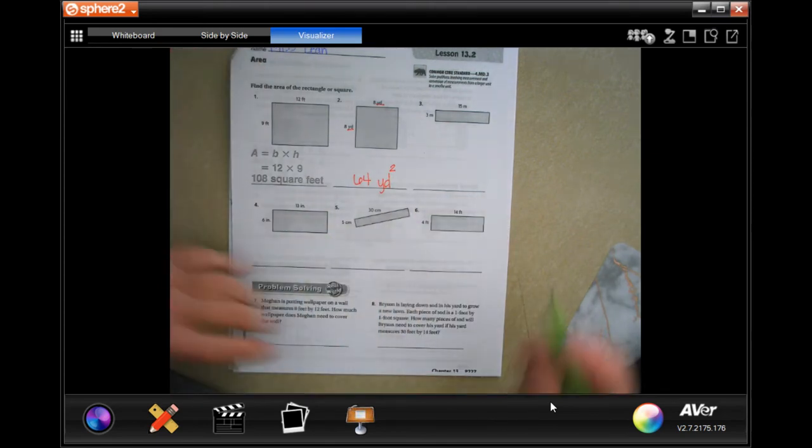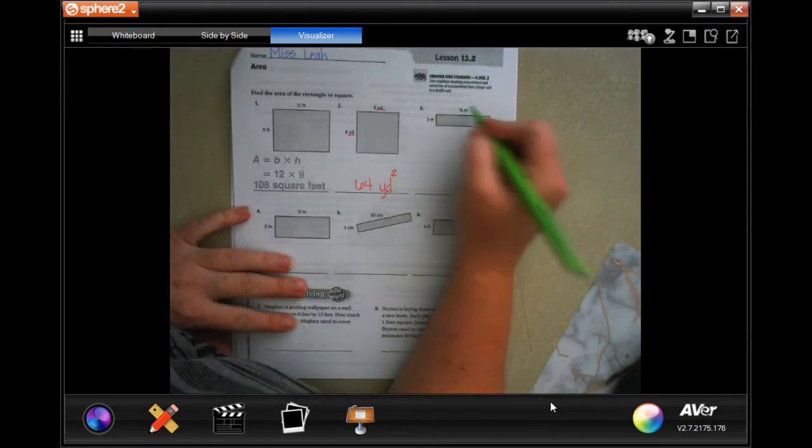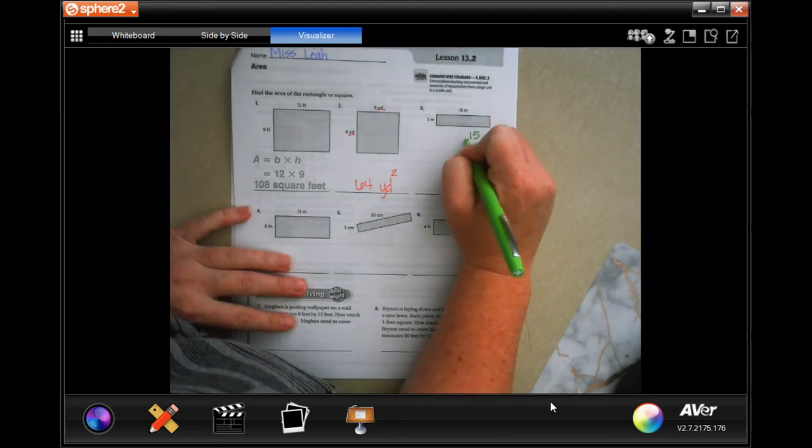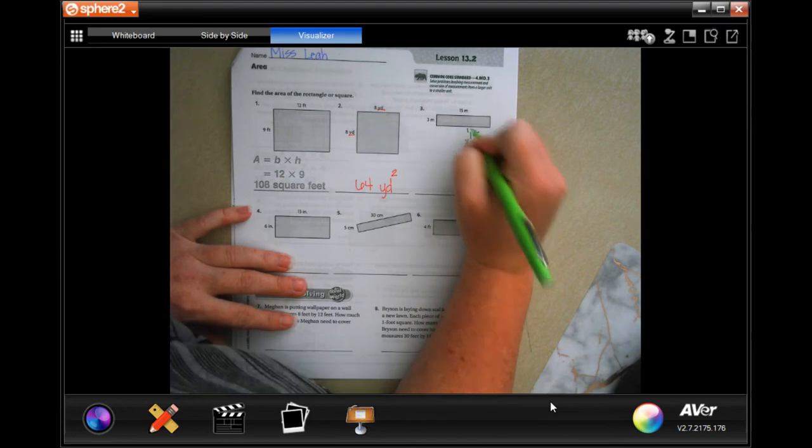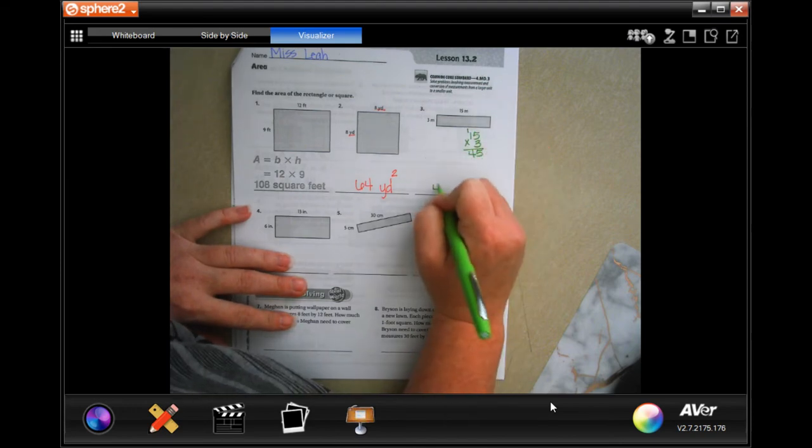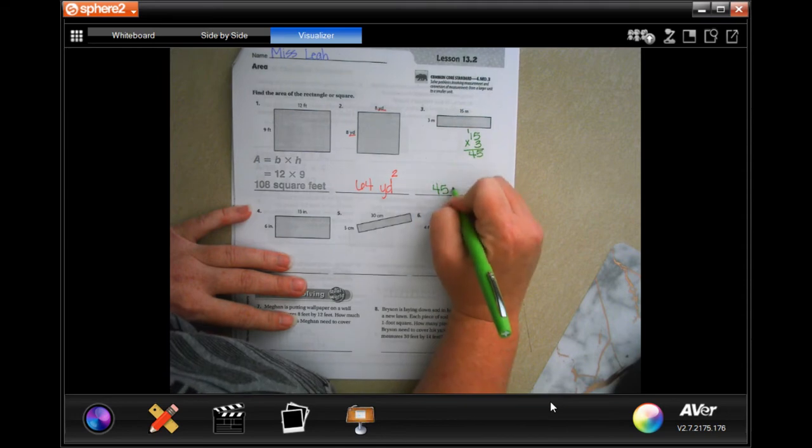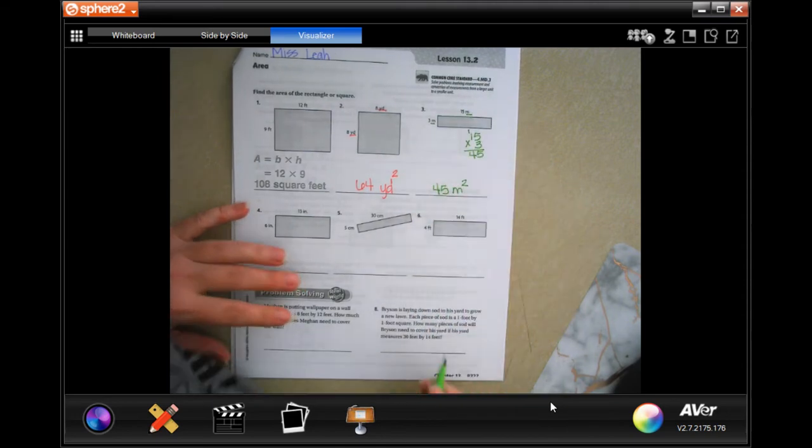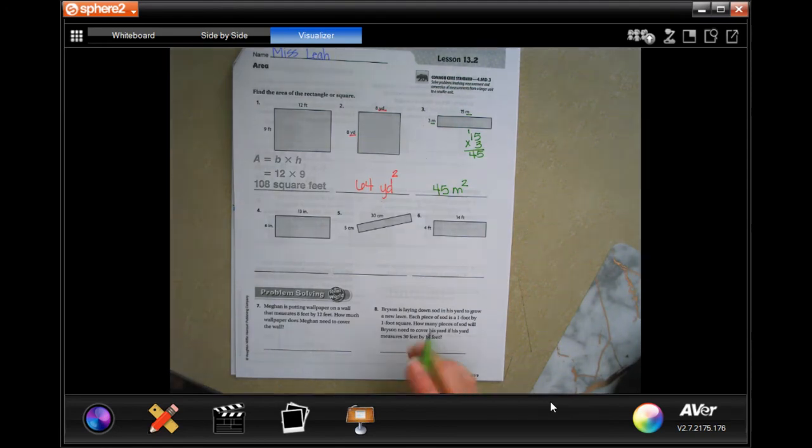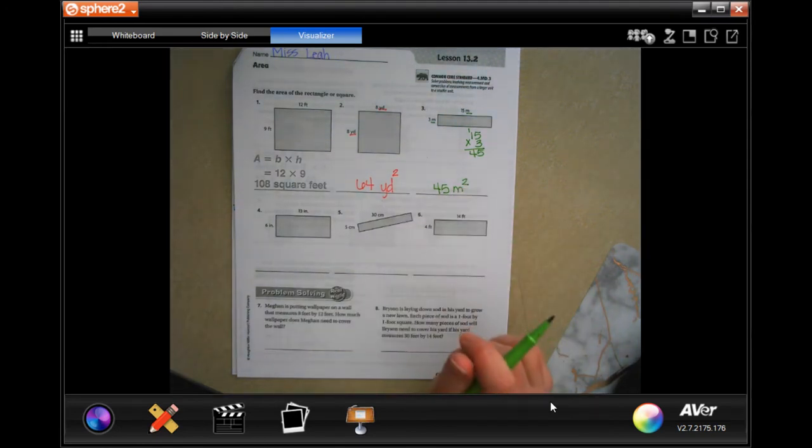Okay, so three times 15. Three times five is 15, carry the one, three times one is three, plus one is four, 45. It's in meters, and we multiply meters by meters, so it's meters squared. Okay, the biggest thing that you're going to have to remember is putting that two up there.